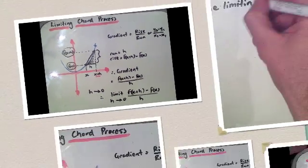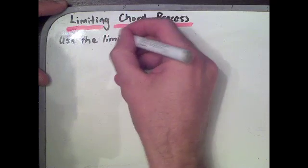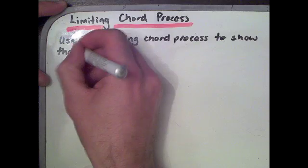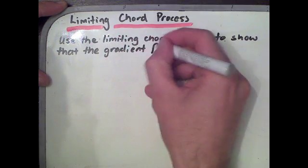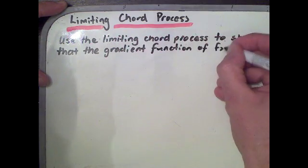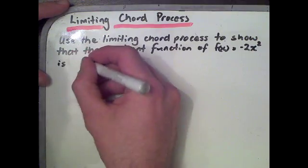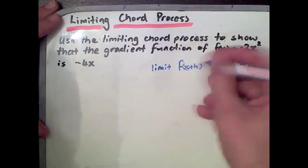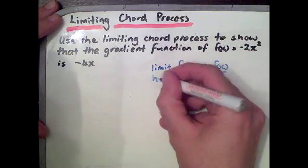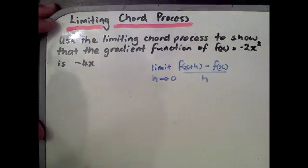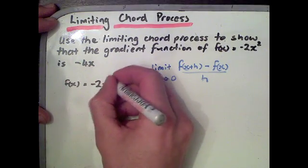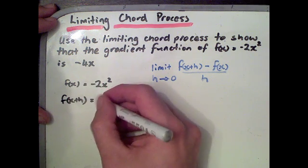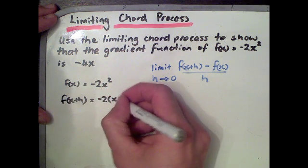Let's look at using the limiting chord process to find the gradient function. Here's a common type of question: use the limiting chord process to show that the gradient function of f of x equals negative 2x squared is negative 4x. We need our formula — find the limit of the gradient as h tends towards 0. We need to know f of x and f of x plus h, so let's replace x with x plus h, giving us x plus h squared.